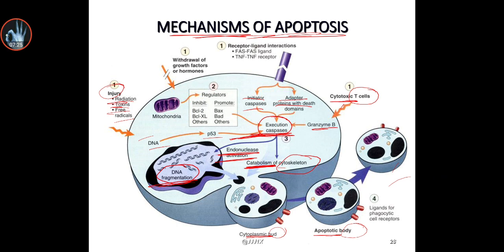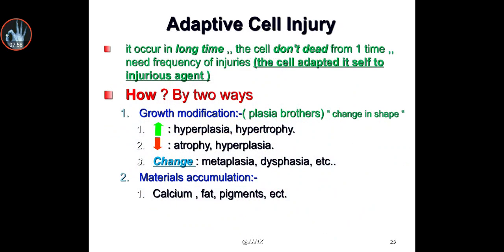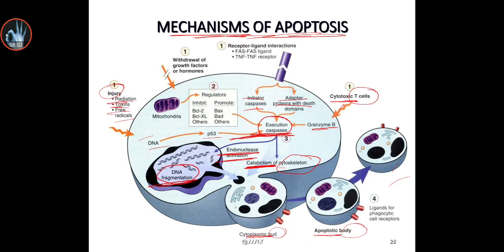This concludes the topic of apoptosis, which is the second pathway of cell death alongside necrosis. We have now covered reversible cell injury, irreversible cell injury, and both types — apoptosis and necrosis. In the next lecture, insha'Allah, we will talk about adaptive cell injury. Thanks for watching; don't forget to like, share, comment, and share the benefits with your friends. As-salamu alaykum.